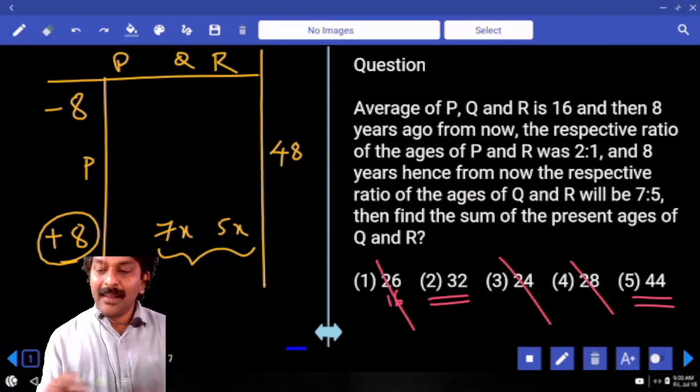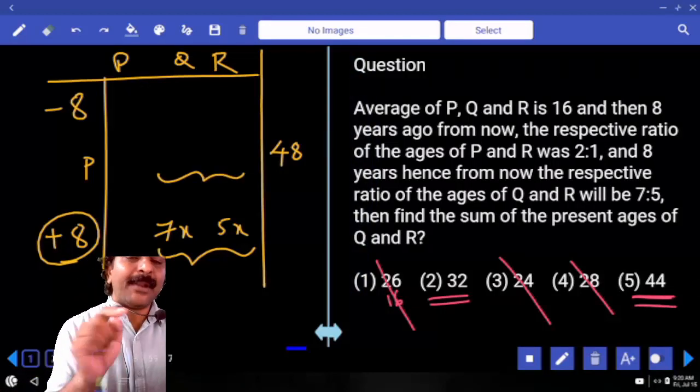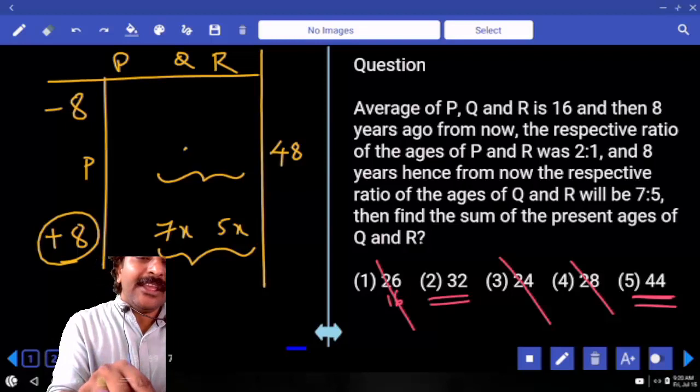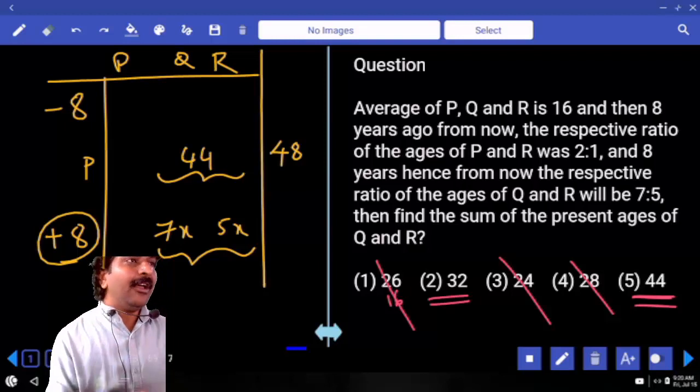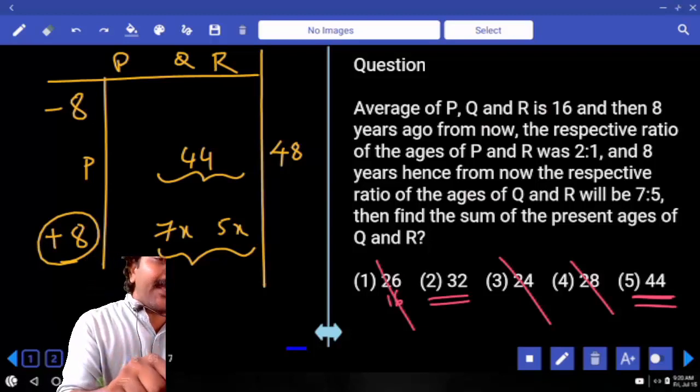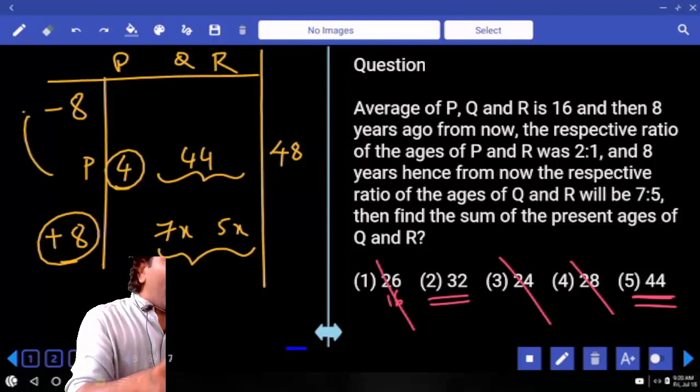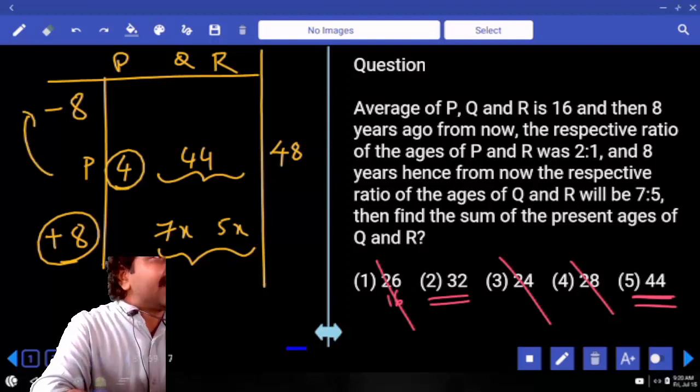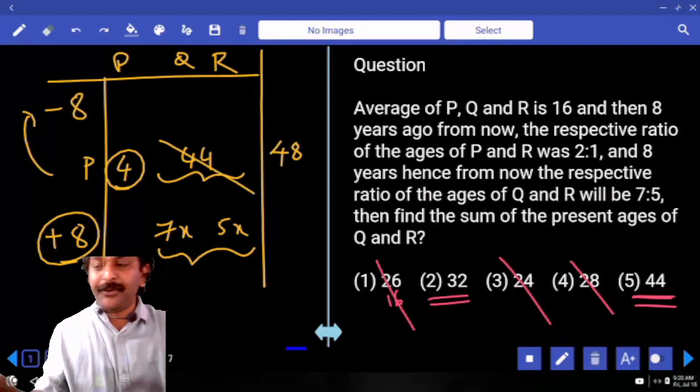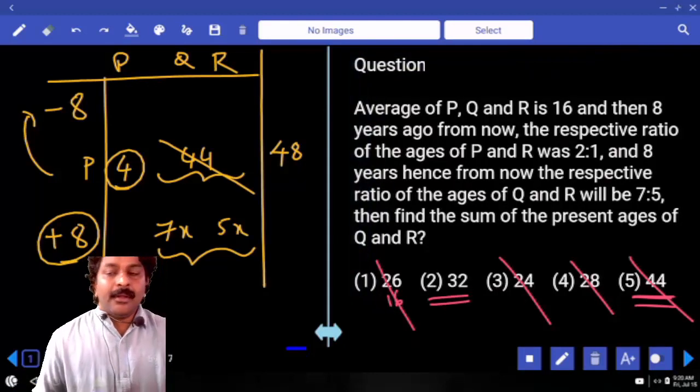In case of 44, if the present age of Q and R is 44, when sum of all 3 members age is 48, then in that case P age must be 4. If P's present age is 4 years, can you go back to 8 years? So is that possible? If 44 is not possible, answer is 32. Over. Understood?